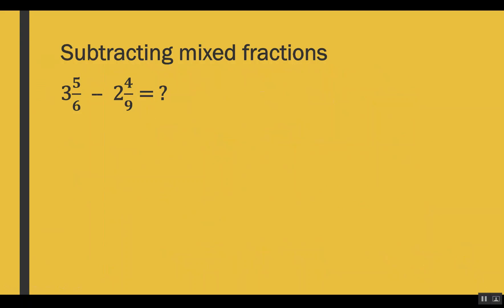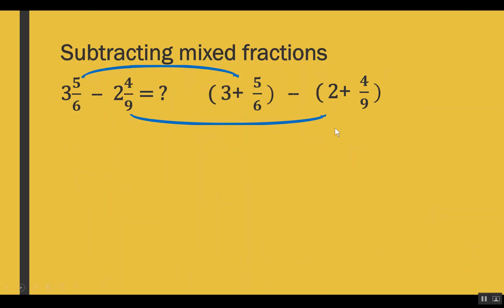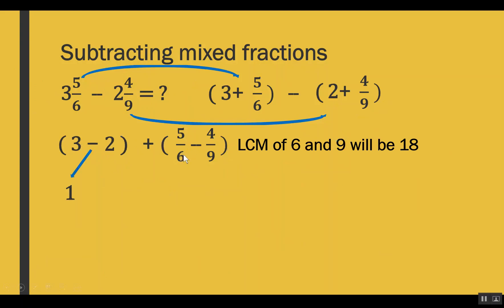Now let's look at an example of subtraction of mixed fractions. The procedure is the same as for addition. For the first fraction we get 3 plus 5 out of 6, and for the second fraction we get 2 plus 4 out of 9. Grouping, we get 3 minus 2 for the whole numbers and 5 out of 6 minus 4 out of 9 for the fractions. Subtracting the whole numbers: 3 minus 2 equals 1. The LCM of 6 and 9 is 18.